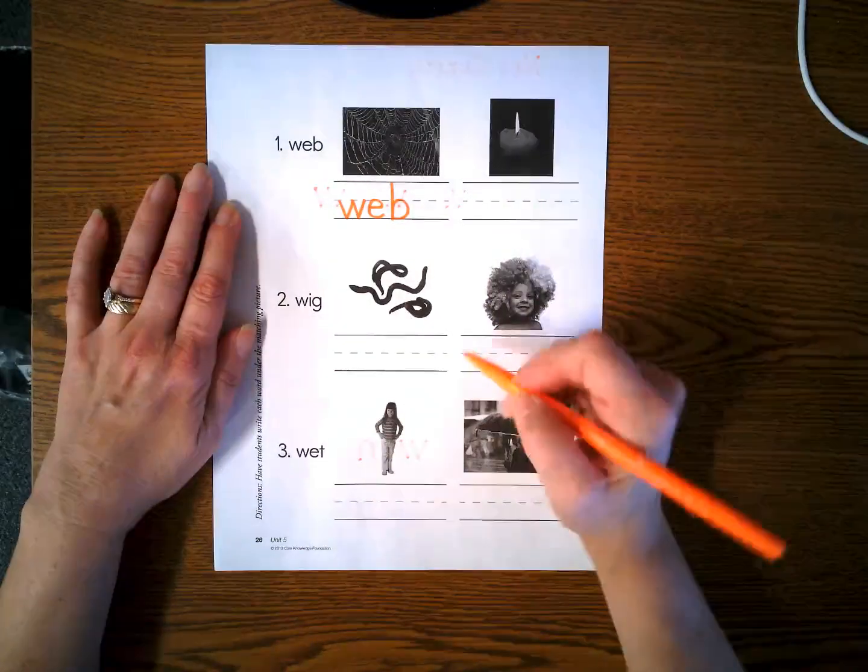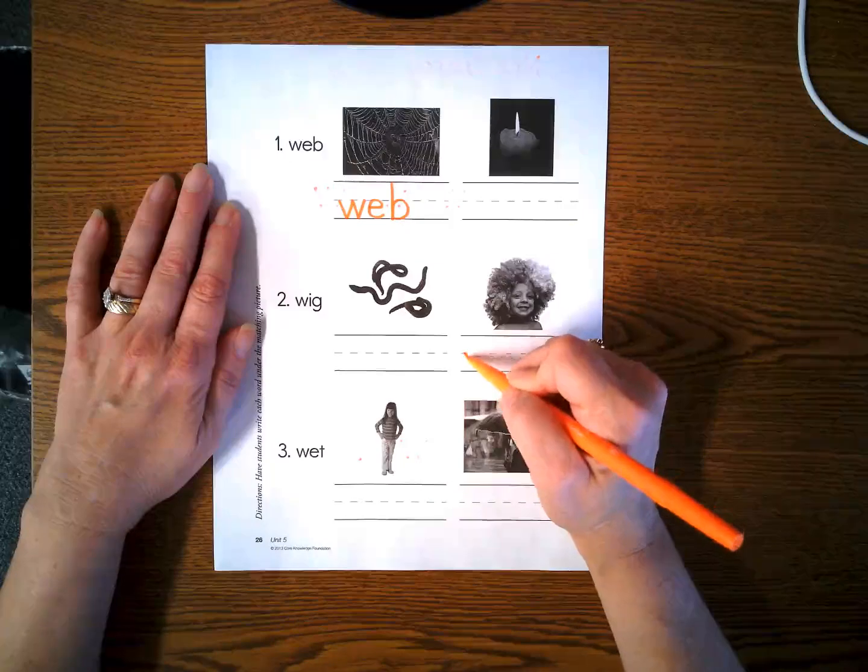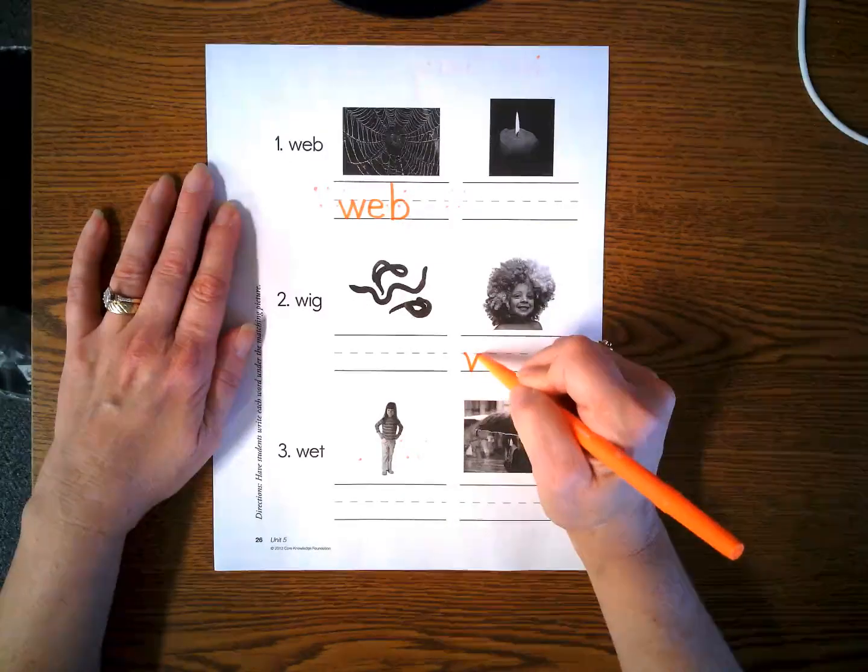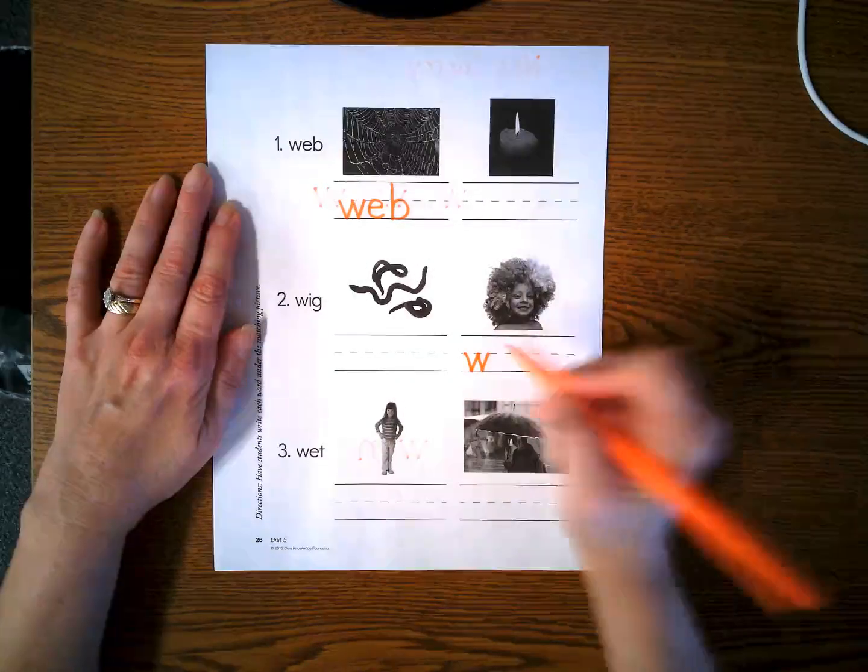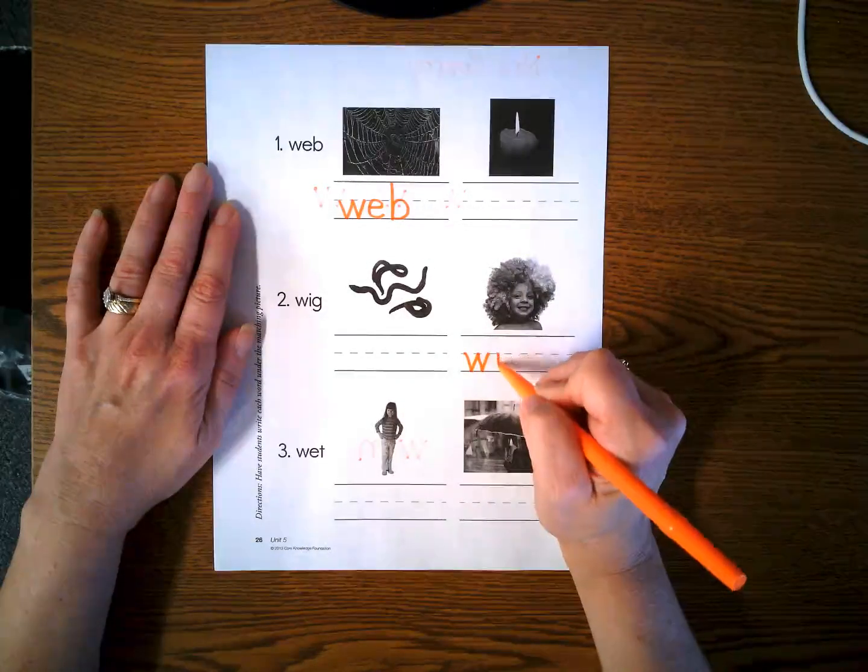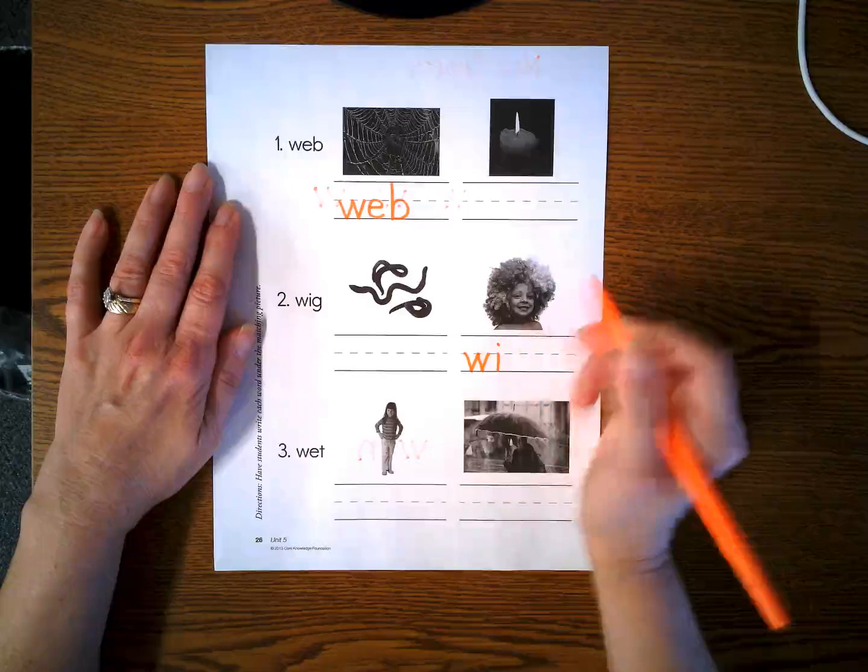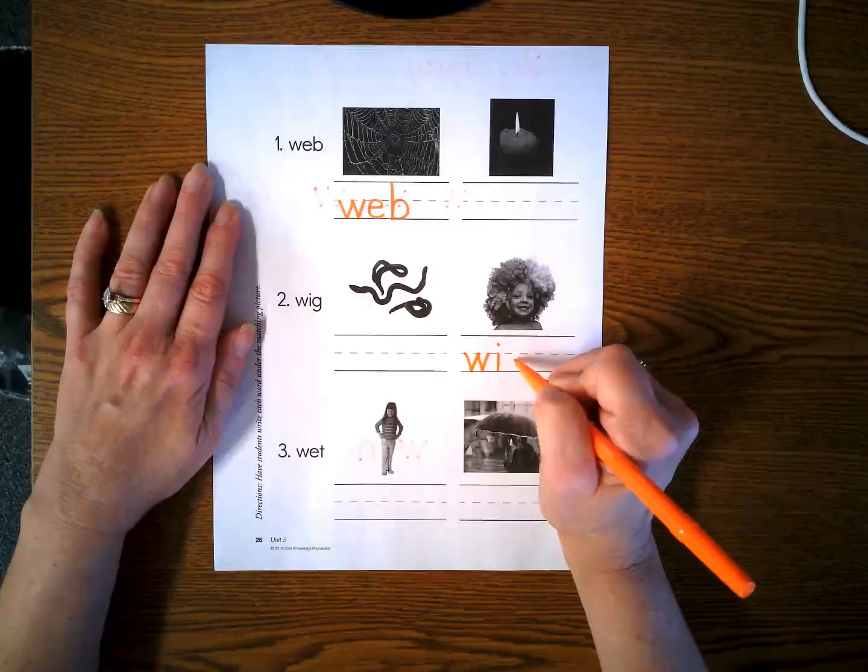Let's write the word wig here. Diagonal down, up, down, up. Lowercase i. Line down, and a dot.